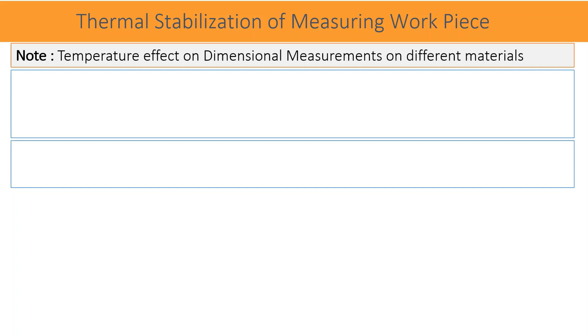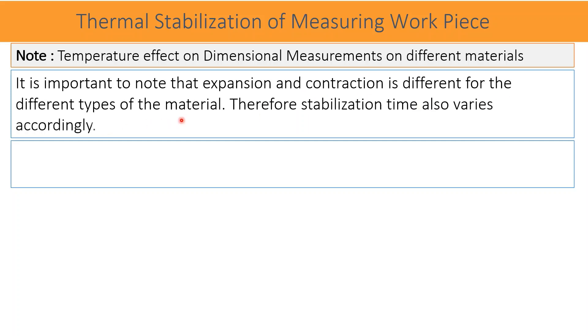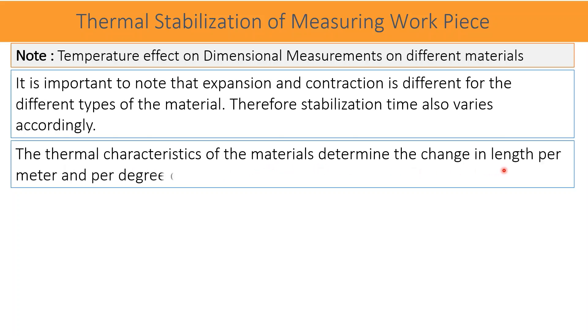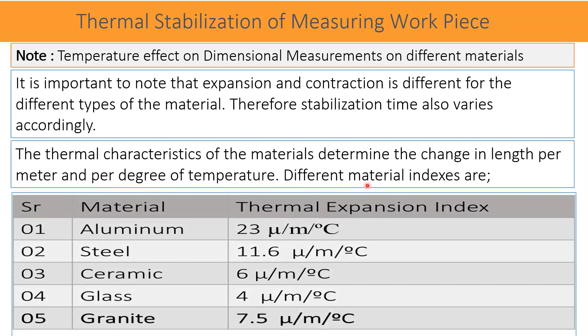A note: Temperature effect on dimensional measurements of different materials. It is important to note that expansion and contraction is different for different types of materials. Therefore, stabilization time also varies accordingly. The thermal characteristics of the material determine the change in length per meter and per degree temperature. Different material indexes are: aluminum 23 micrometers per degree centigrade per meter length, steel 11.6 microns, ceramic 6 microns, glass 4 microns, granite 6 to 7.5 microns.